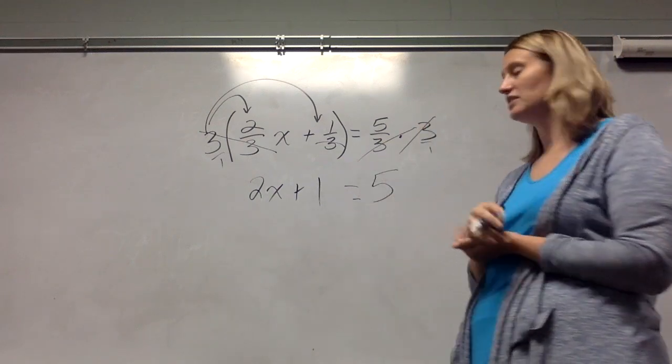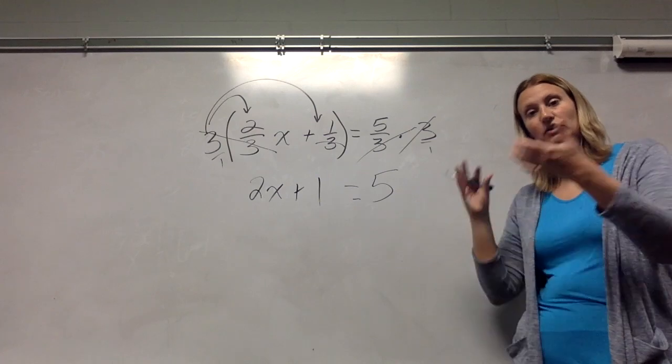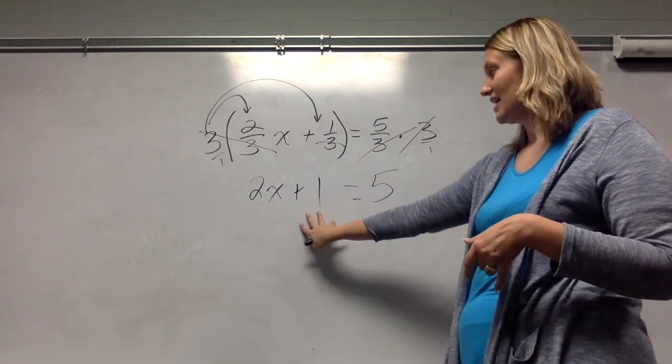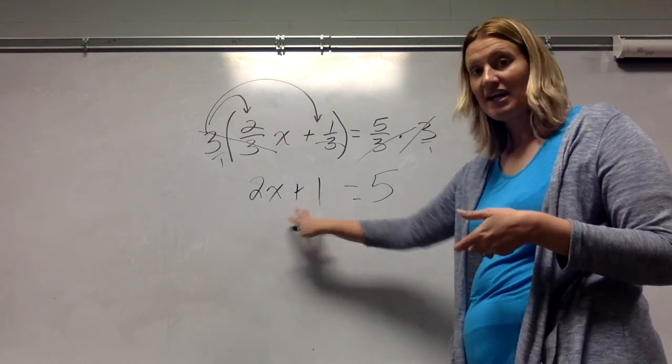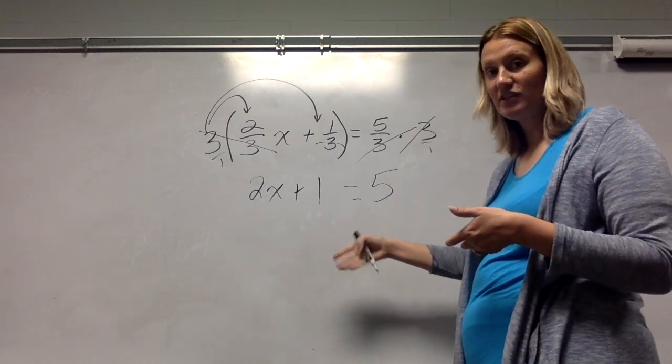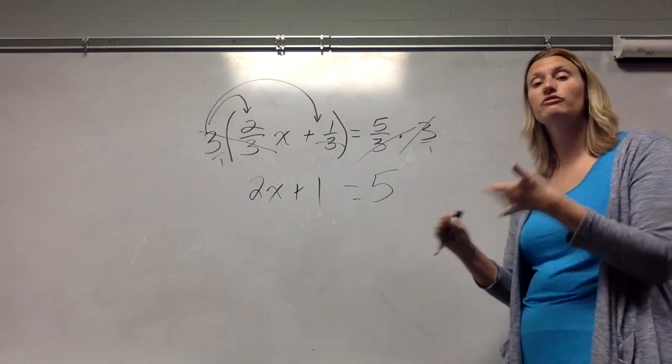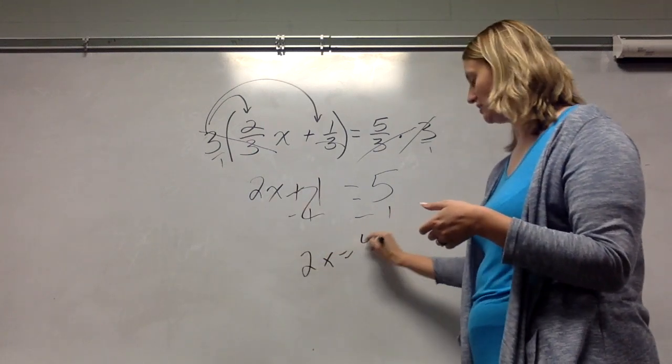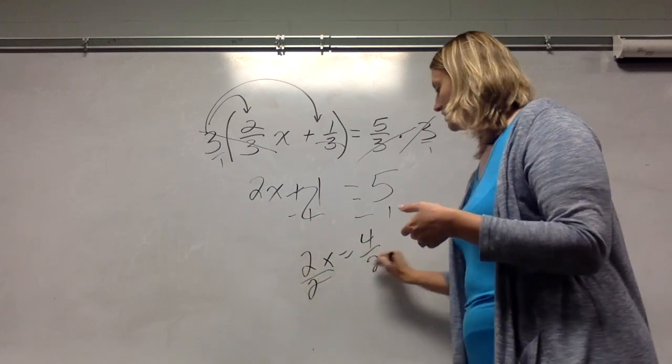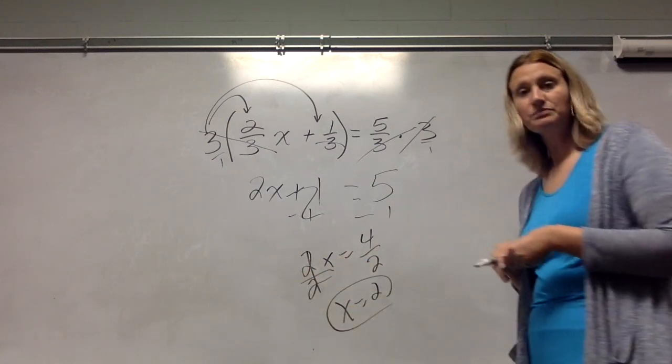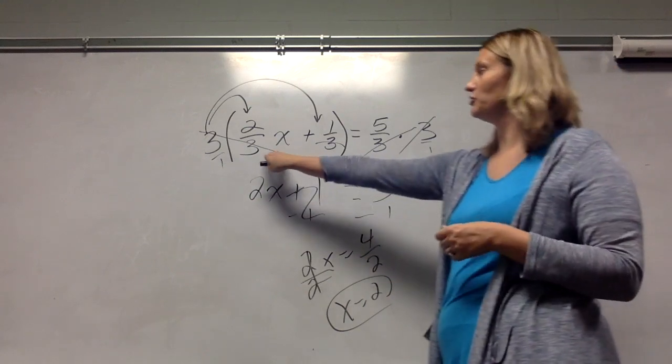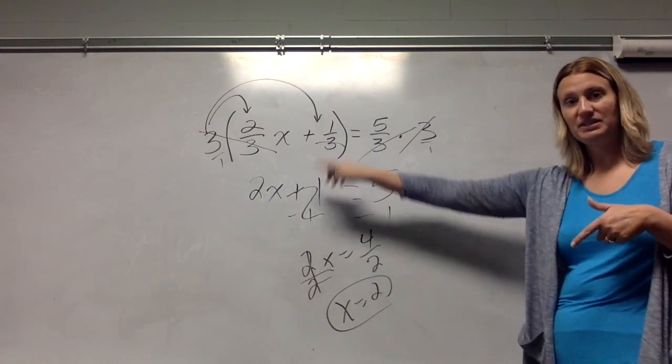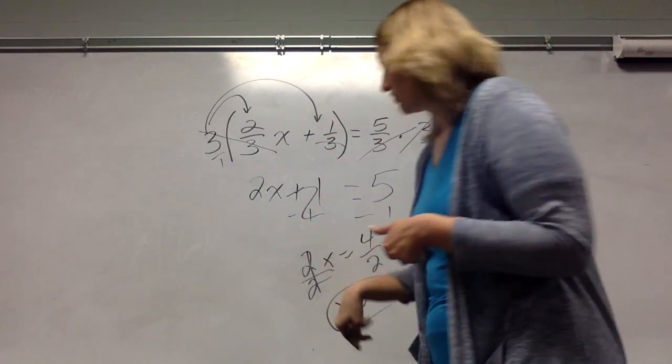So by multiplying the entire equation by three, which was my denominator, I now have an equivalent equation that has no fractions, and I can solve this one. 2x plus one equals five is a lot simpler for most of us to solve. Subtract to get 2x equals four. Divide by two, and I have that x equals two. Now, when I check my answer, I do want to check it back with the original equation, not with this one in case a mistake was made from here to here.